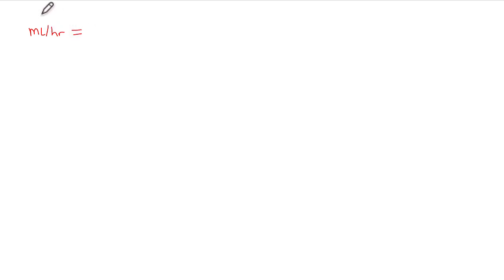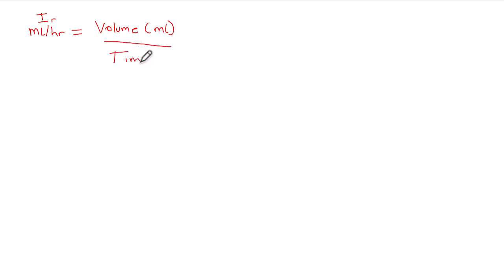There are some important formulae I want you to remember. The first is your infusion rate. Your infusion rate (IR) in mils per hour equals the volume of fluid you're going to infuse — given in mils — divided by the time. If you're calculating in mils per hour, the time should be in hours; if in mils per minute, the time should be in minutes.